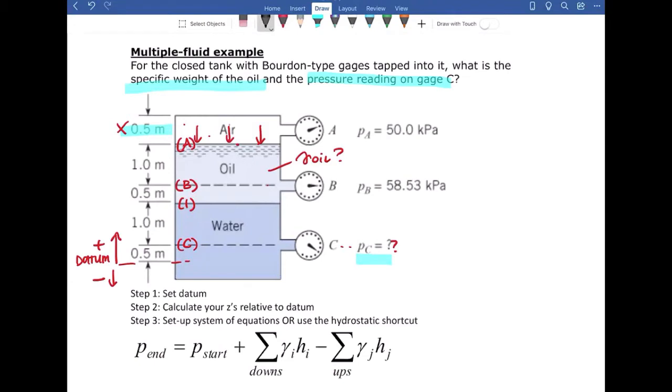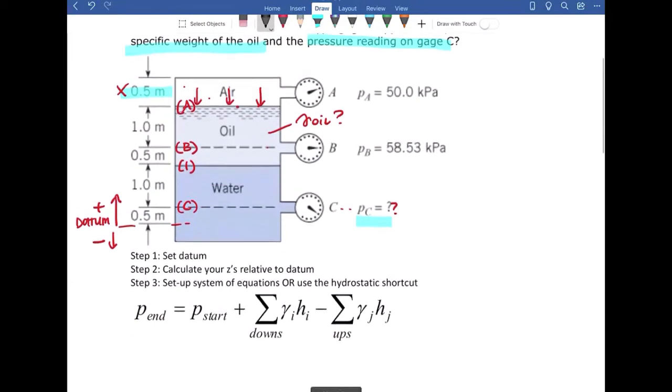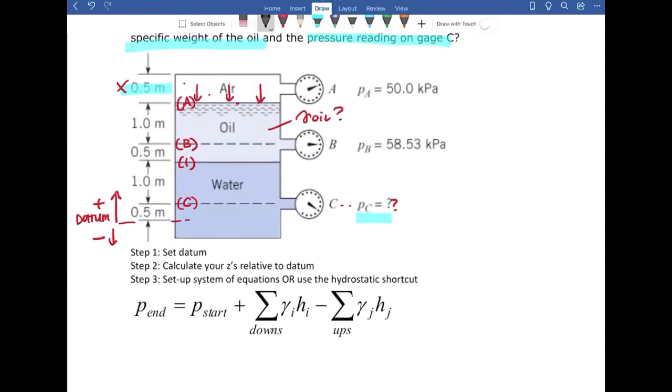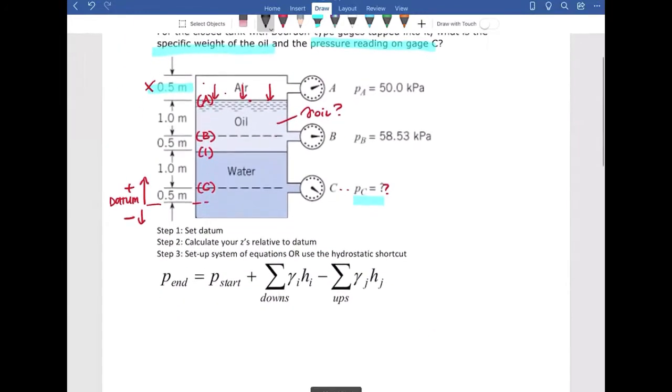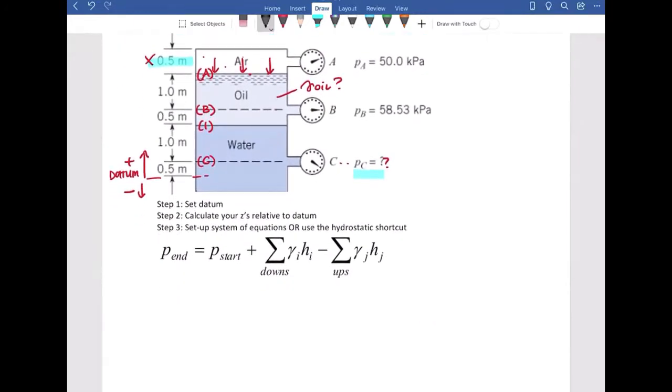So I've set my datum, and now I'm going to calculate my Zs relative to my datum. I'm going to start from the bottom and work my way up. So ZC is 0.5 meters based on the picture.